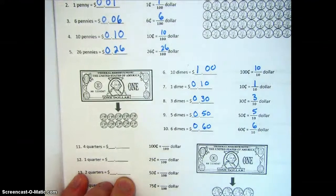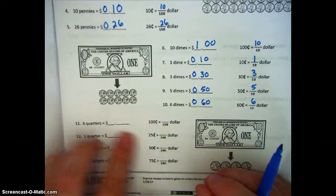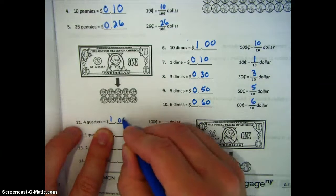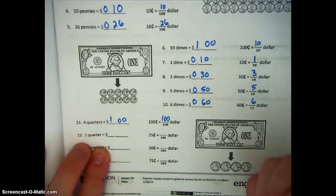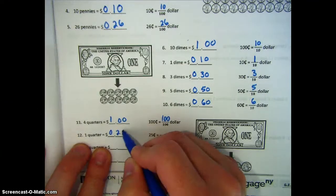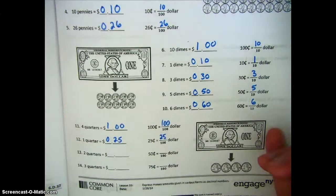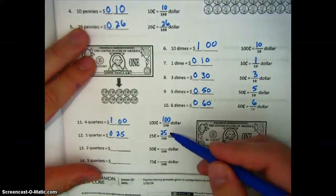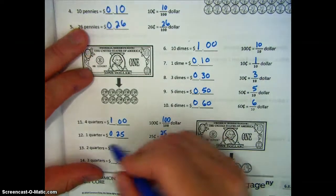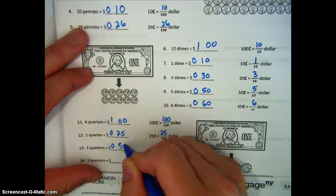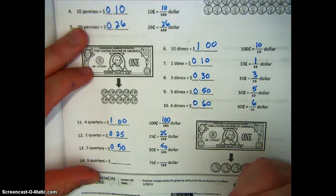Moving on to quarters — slightly different because we're still dealing with hundredths. Four quarters is one dollar, so one hundred cents is one hundred hundredths of a dollar. One quarter is twenty-five cents, or twenty-five hundredths of a dollar. If we reduce twenty-five hundredths, we get one-fourth, or one quarter. Two quarters would be fifty cents, or fifty hundredths of a dollar, which reduces down to one-half.